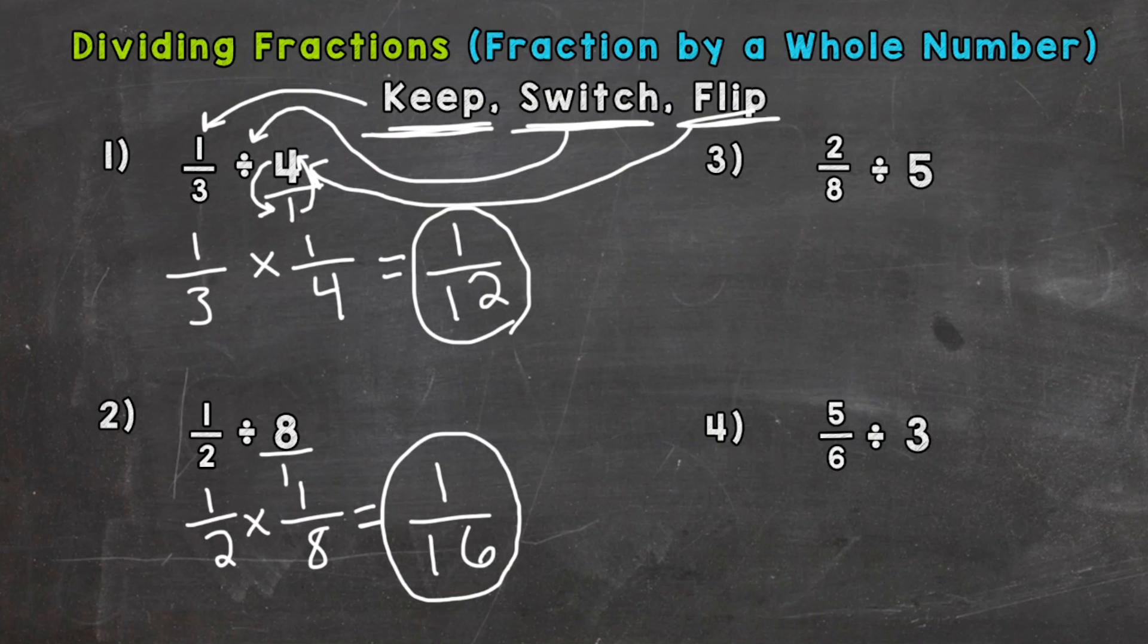Number three, we have two-eighths divided by five. So let's keep, switch, and flip. Now our problem is set up so we can multiply straight across. Two times one is two. Eight times five is forty.